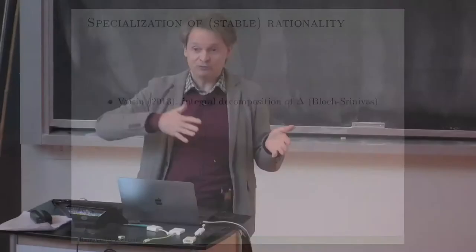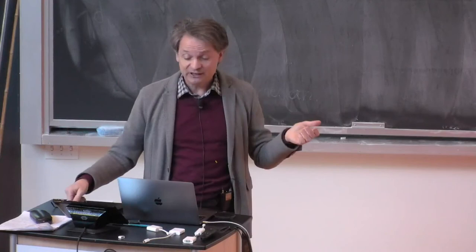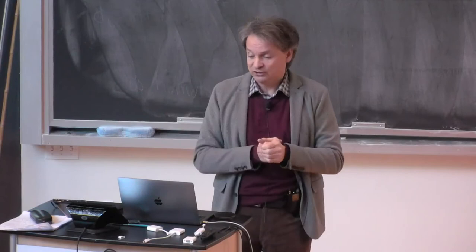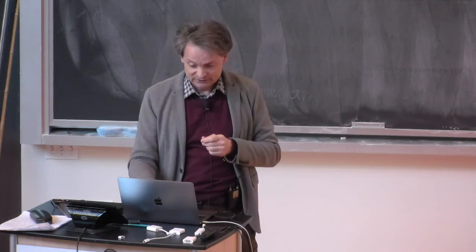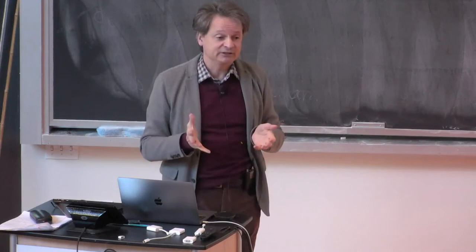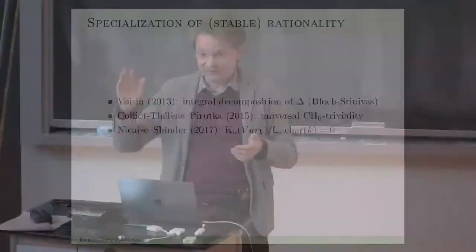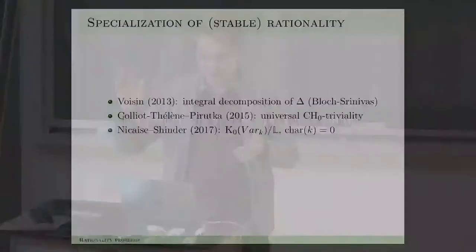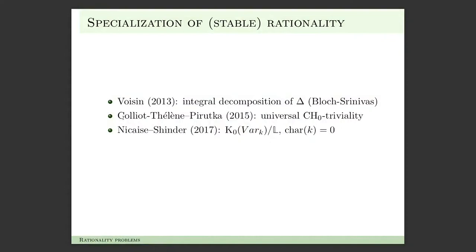Colliot-Thélène and Pirutka, whose theorem was also on the board, introduced the related notion of universal CH0 triviality based on the theory of zero cycles. In 2017, they realized you don't have to go via the theory of zero cycles — stable rationality itself directly specializes in mildly singular families. Very soon after, Maxime Kontsevich and I discovered that you don't need to look at stable rationality classes. You just have to look at rationality classes, and there is this new invariant called the Burnside group or ring, generated by classes of algebraic varieties.